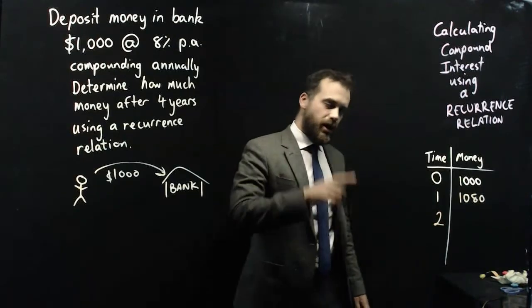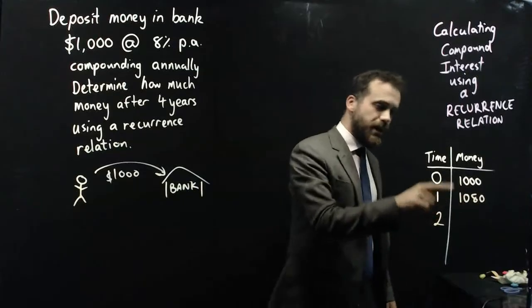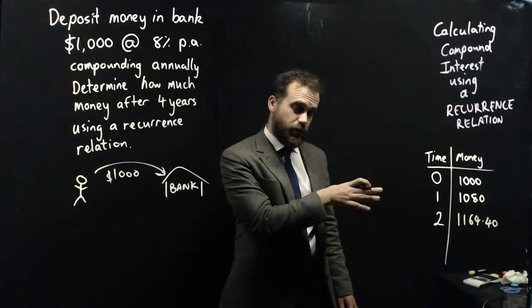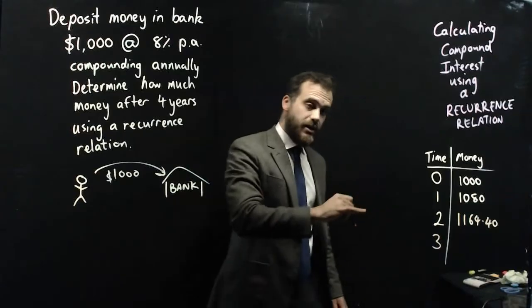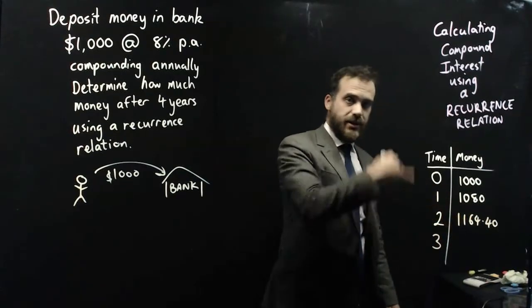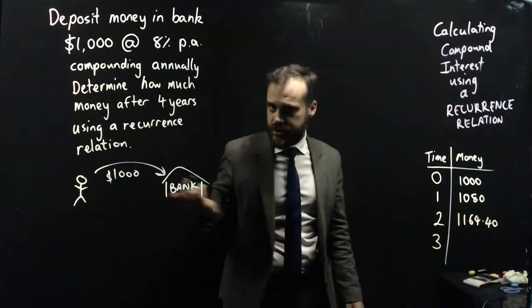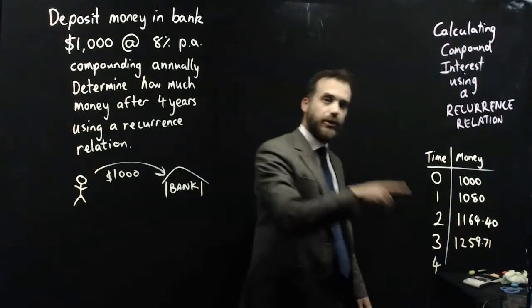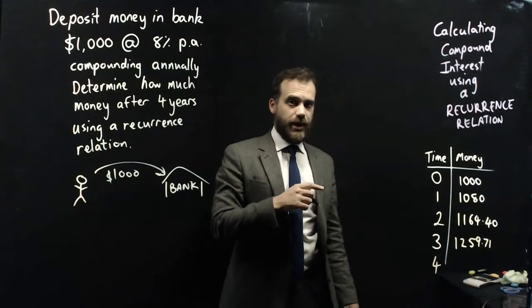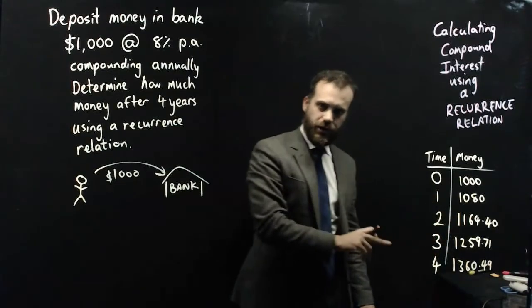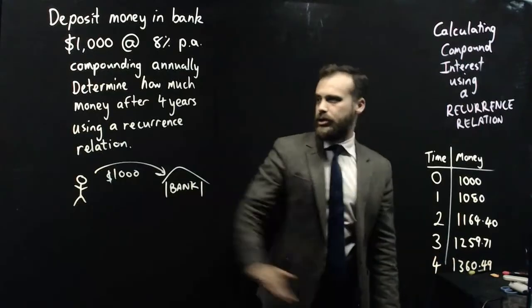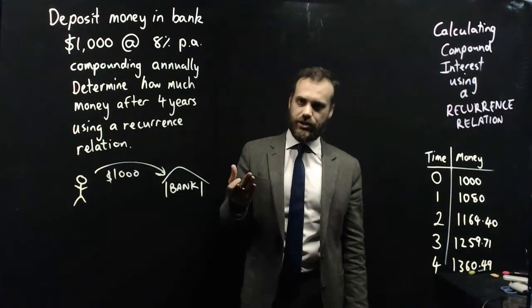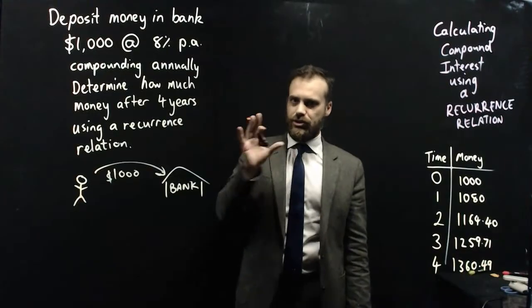At time two, I'm going to have 8% of that new balance, so 8% of 1,080, which is $1,164.40. After another year, I'm going to have an extra 8% on top of that, so I need to take that and multiply it by 1.08. And after four years, if I take that and multiply it by 1.08, that's how much money I'll have in the bank - $1,360.49. What I've done there is the rough working for solving this, but I haven't used the recurrence relation to do it, and we really should use a recurrence relation. So let's set up a recurrence relation and do this properly.